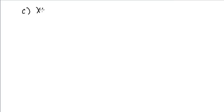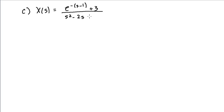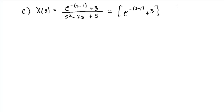Here's another example from the same problem, Part C, where X of s is equal to e to the minus s minus 1 plus 3, all over s squared minus 2s plus 5. I'm going to pull out the numerator term e to the minus s minus 1 plus 3. The denominator actually has complex roots, so I'm going to take the approach of completing the square. This will be s minus 1 squared.